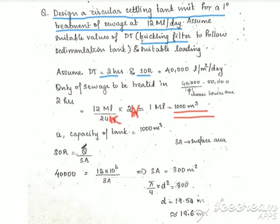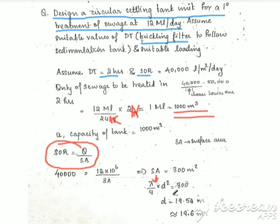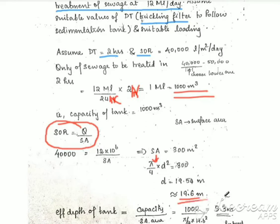Surface overflow rate equals discharge divided by surface area. The surface overflow rate is 40,000 liters per meter square per day, and the discharge is 12 million liters per day. Therefore the surface area equals 12,000,000 divided by 40,000, which is 300 square meters.